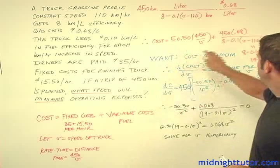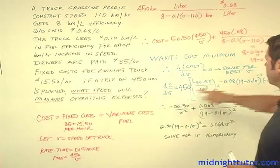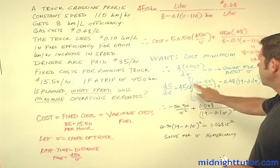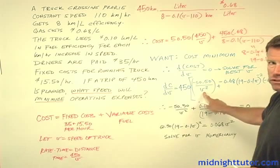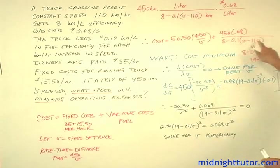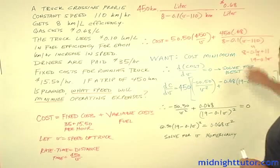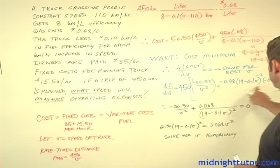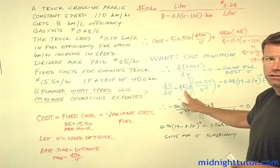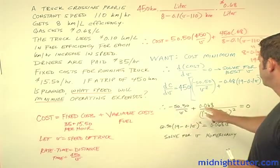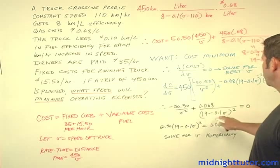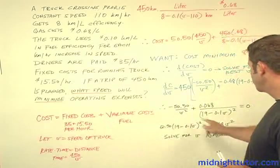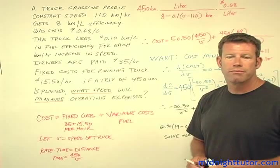dC/dV is the derivative of the whole cost expression. We can pull 450 out in front. Then we have 50.50 times V to the minus 1, giving minus 50.50 divided by V squared — don't forget that minus sign. Then for the fuel term, which is in the denominator, we have minus 0.68 times that quantity to the minus 2 power times the internal derivative factor of minus 0.1. Canceling the 450 and setting equal to zero gives us: minus 50.50 over V squared plus 0.068 divided by (19 minus 0.1V) squared equals zero. It's a numerical problem — you just crank it out and apply the binomial formula to get the answer.